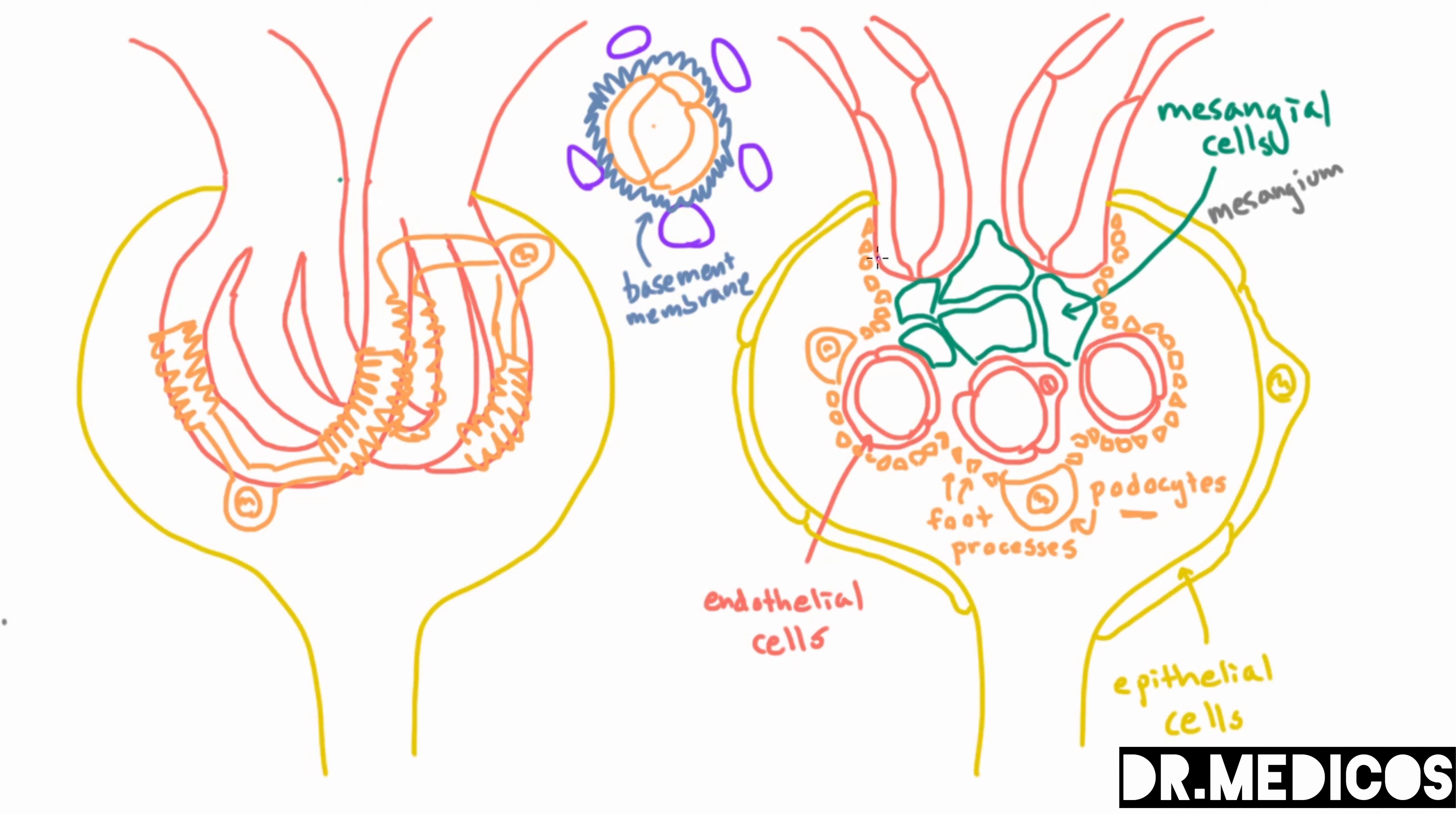And since these podocytes are epithelial cells, well we're gonna have a basement membrane beneath them. And it turns out this thing is really important so we actually give it a special name. We don't just call it a basement membrane, we call it a glomerular basement membrane. And it's often abbreviated GBM.